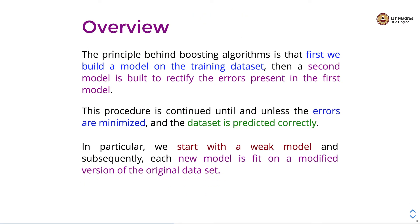In boosting we first build a model on the training dataset and then the second model is built to rectify the errors present in the first model. Note that both of these models are built on the same dataset. We continue with this procedure until the errors are minimized and the dataset is predicted correctly. We start with a weak model and subsequently each new model is fit on a modified version of the original dataset.